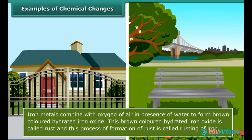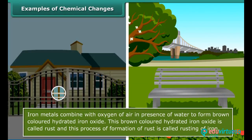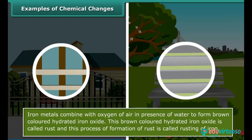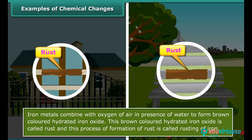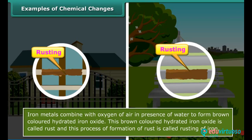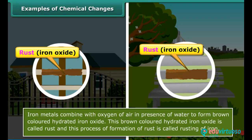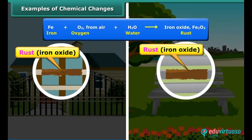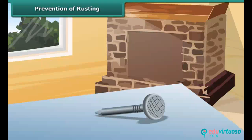Children, you can see many chemical changes in your daily life. Have you seen an iron gate or iron bench in a garden with a brownish film on it? This brownish film is called rust, and the process of formation of this film is called rusting. The chemical name of rust is iron oxide. Rusting occurs in the presence of oxygen and moisture.